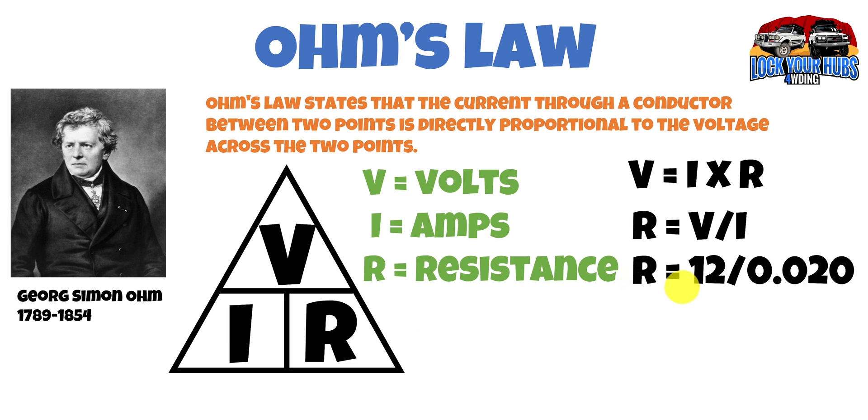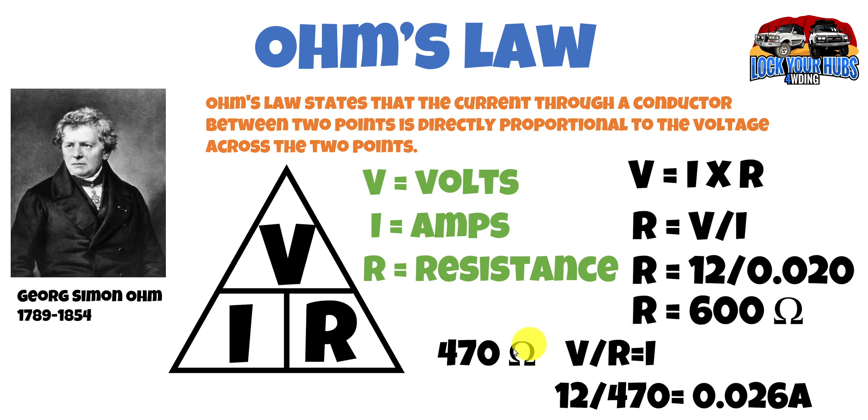So now we know our resistance is 12 volts and we can divide that by our 20 milliamps. And that gives us a figure of 600 ohms. And that would give us 20 milliamps across that LED. But you can't get a 600 ohm resistor. Well not easily anyway.